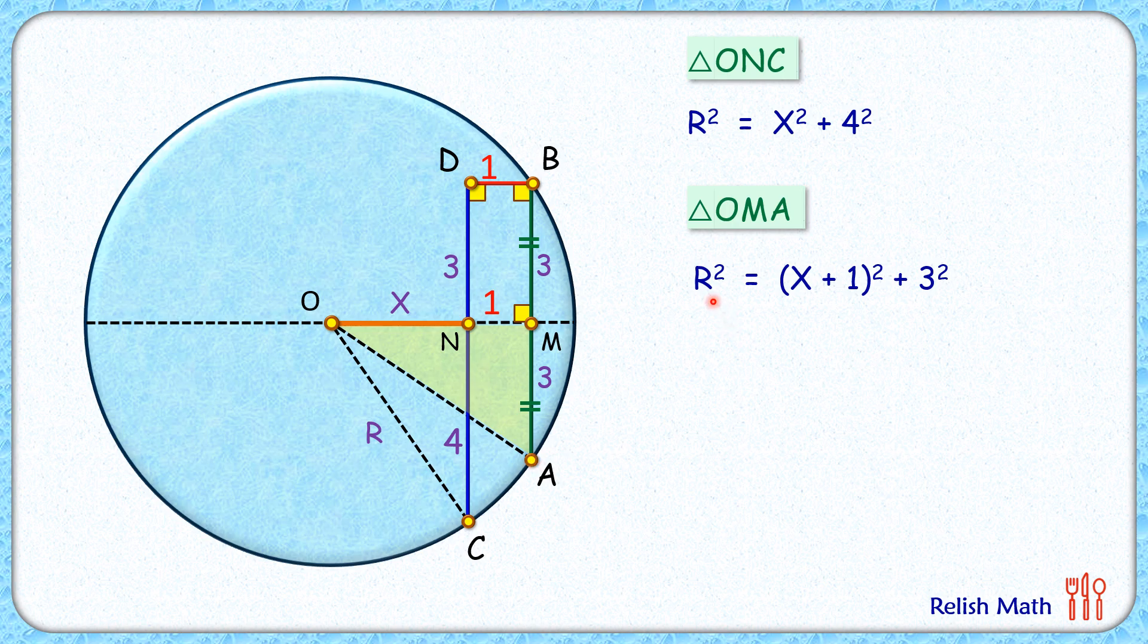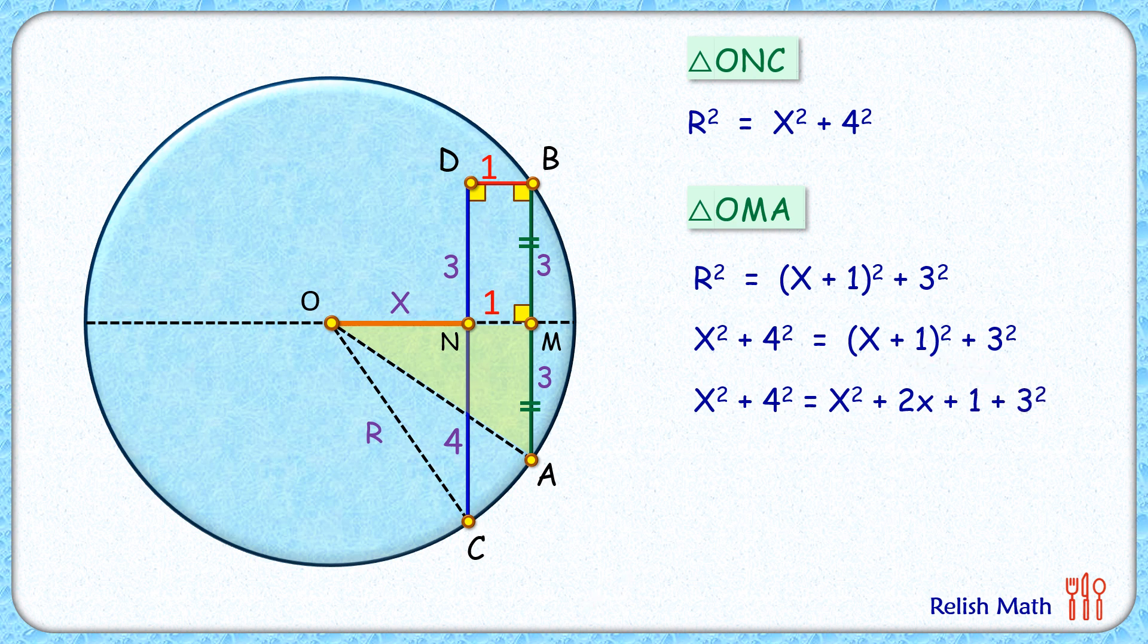Now we can replace this R² value with X² + 4². Opening the brackets on the right side gives us X² + 4² = (X + 1)² + 3². Both sides have X², which cancels out. Simplifying, we get X = 3 centimeters.